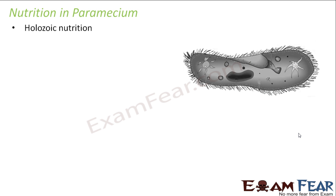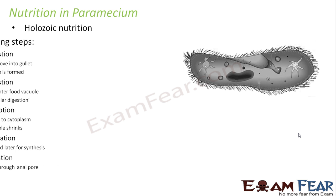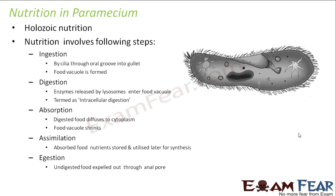Now let us look at nutrition in another simple organism, that is paramecium. We have studied about paramecium in class 9. Even paramecium has holozoic nutrition — it feeds on microorganisms like bacteria, algae, and yeast. Let us see how the different steps happen in the case of paramecium.